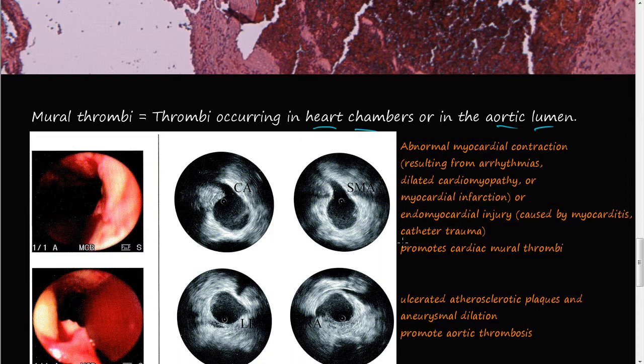Inside, what causes aortic thrombosis is ulcerated atherosclerotic plaques and aneurysmal dilatation. If you have an aneurysm inside your aorta, that's going to cause problems with laminar blood flow. That will create stasis or turbulence blood flow, which is part of Virchow's triad, and that will promote aortic thrombosis.